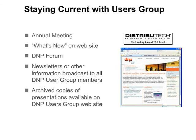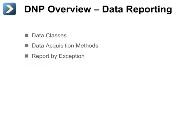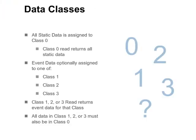Now let's take a closer look at the protocol itself. We'll discuss data acquisition methods, data classes, and report by exception. In DNP-3, static data refers to a point's current value. It is common for a class 0 poll to return all points in the outstation, though this is not required. Points not returned by a class 0 poll can only be read by direct reads. DNP requires that any points in class 1, 2, or 3 must also be in class 0. Data can be in class 0 and not be in class 1, 2, or 3, however.